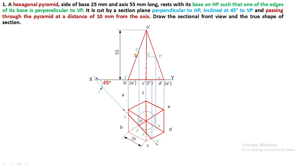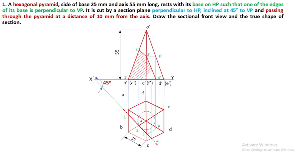Now join all points 1 dash, 2 dash, 3 dash, 4 dash by means of continuous thick lines and do hatching. This hatched portion is called the apparent shape of section. After completion of the apparent shape of section, the entire front view is called the sectional front view.